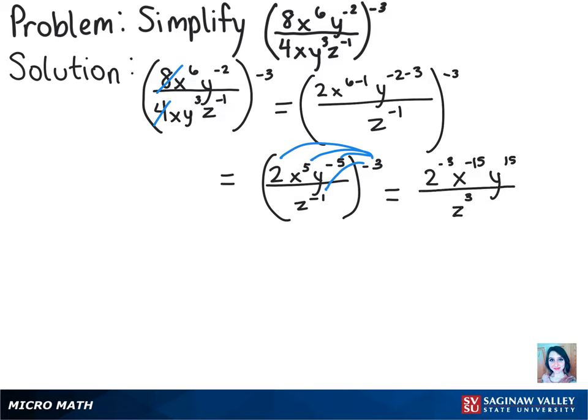Now flipping the terms with the negative exponents, we'll have y to the fifteenth power over 2 cubed times x to the fifteenth times z cubed. That will give us our final solution of y to the fifteenth power over 8 times x to the fifteenth times z cubed.